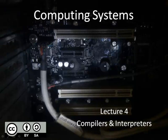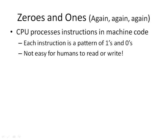In this lecture, we're going to look at compilers and interpreters. Going back a bit, back to zeros and ones, the CPU processes instructions in machine code. The transistors, the key components that make up the CPU, only really understand on and off. So all of the instructions that a CPU processes are basically patterns of ones and zeros. These are obviously not going to be easy for humans to read or write.